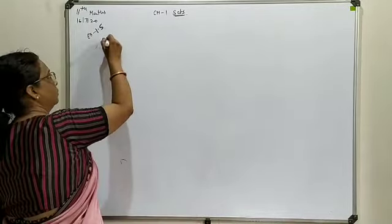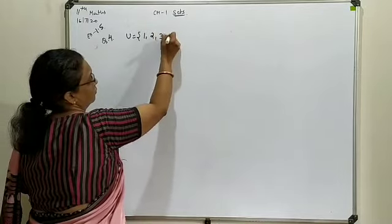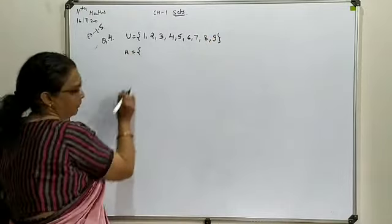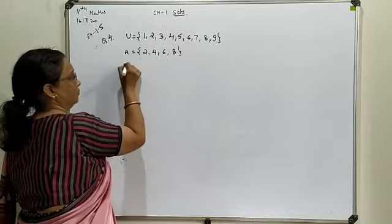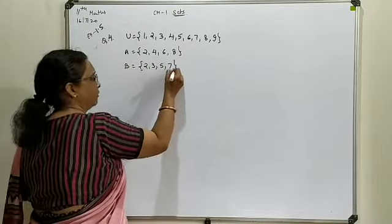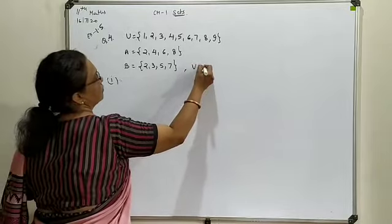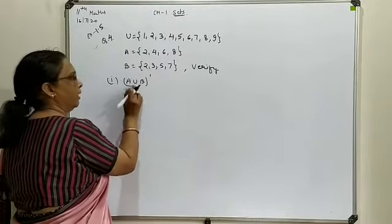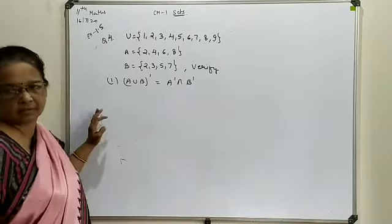In question number 4: U = {1, 2, 3, 4, 5, 6, 7, 8, 9}, A = {2, 4, 6, 8}, and B = {2, 3, 5, 7}. For the first part, we have to verify that (A ∪ B)' = A' ∩ B'. This is the first law of De Morgan.